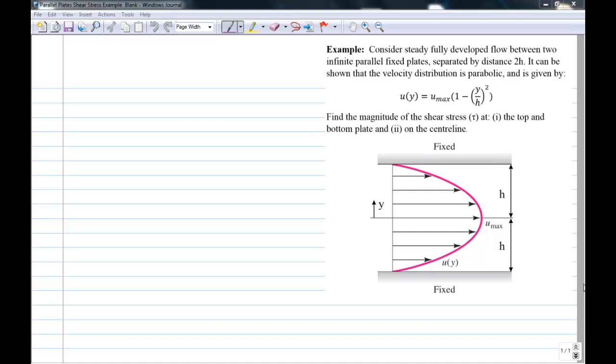This is an example of calculating shear stress in a fluid with a more complicated velocity distribution. In chapter one we calculated the shear stress between two plates. One plate was fixed and one plate was moving and we got a linear distribution, and the calculation of the shear stresses on the surface was quite straightforward.